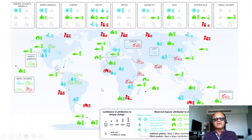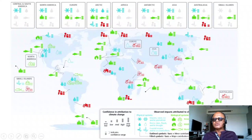It's a synthesis of all available data to look at observed impacts attributable to climate change in physical systems like glaciers, rivers, and coastal erosion, as well as biological systems like terrestrial ecosystems, wildfires, and marine ecosystems.